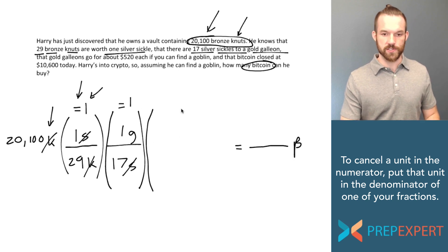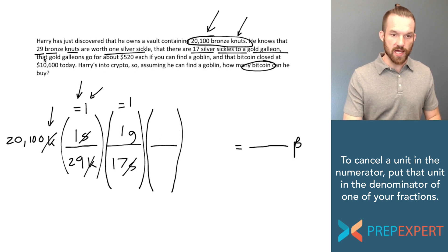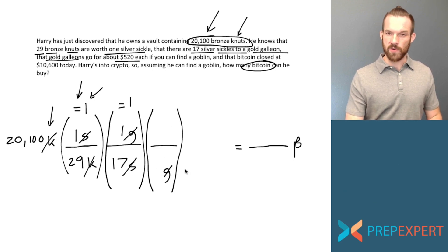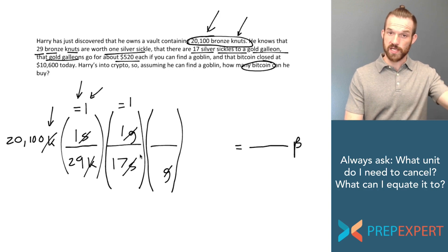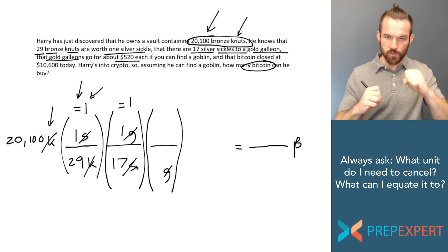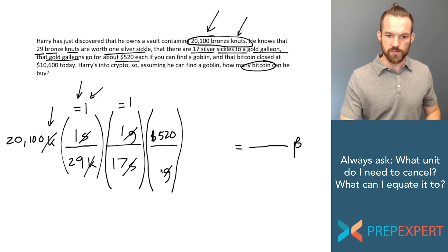What can I convert galleons to? Not directly to Bitcoin quite yet but I do know that gold galleons go for about $520 each if you can find a goblin. So I'll put galleons in the denominator. How do I know it goes there? Because I'm trying to cancel the galleons that is in the numerator. So if I want to cancel one that's in the numerator I got to add it to the denominator. So what goes in the numerator? Dollars. And I know that $520 are equal to one gold galleon. So that fraction is also equal to one.